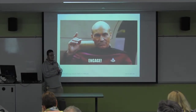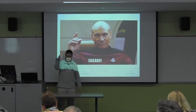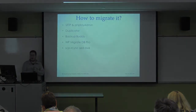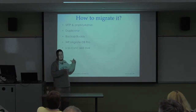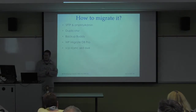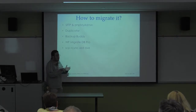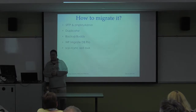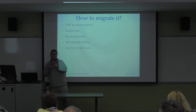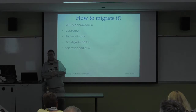Engage! How do we migrate? We can migrate using SFTP, phpMyAdmin, and Duplicator. I'll also talk about BackupBuddy, though I won't demo it. And I'll cover WP Migrate DB Pro. I will not be covering SCP, rsync, sed, or awk — my colleagues can do all that, but I'm not expecting you to.